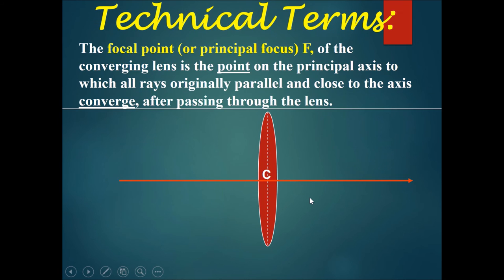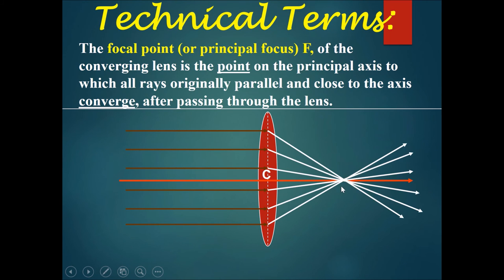Next is the focal point. The focal point or the principal focus F of the converging lens is the point on the principal axis where all the rays that are originally parallel and close to the axis, after they pass through the lens, would converge. This is called the focal point.